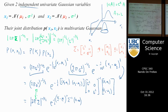So this is also equal to (2π)⁻¹ |Σ|⁻¹/² e to the minus one-half (X − μ)ᵀ Σ⁻¹ (X − μ).